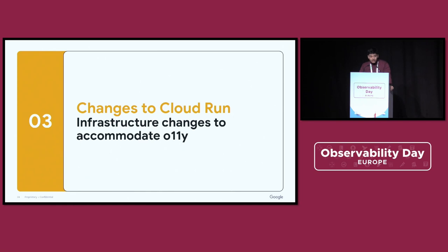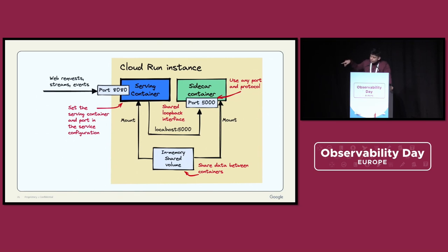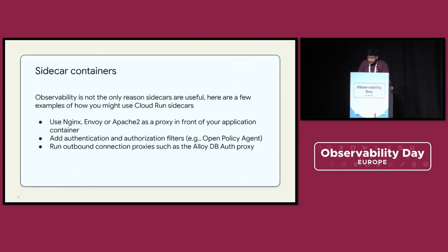The first change is we introduced sidecars. Sidecars allow you to start independent containers that run alongside the main container that's serving web requests. The main use case for this is to support running collection agents — like OTel might run in a sidecar. All containers share the same network namespace, so they can communicate with local host and port. They also can share files because they have shared volumes that are mounted. Observability is not the only use case for sidecars — they can also be used for Nginx in front of your application, authentication and authorization filters, and connection proxies.